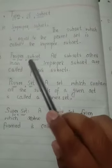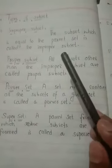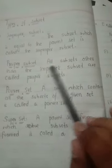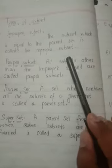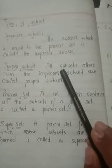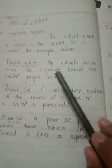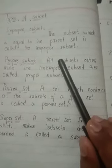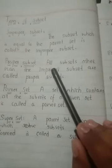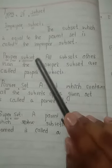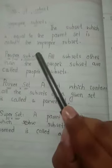Proper subset: all subsets other than improper subset are called proper subsets. All subsets are proper subsets except the subset which is equal to the parent set. That will be improper subset. All other subsets are proper subsets.